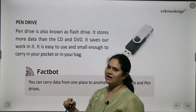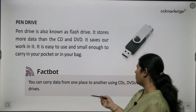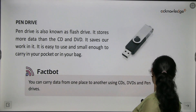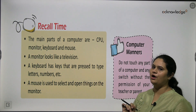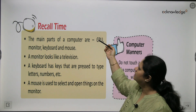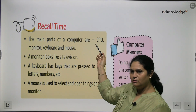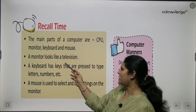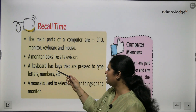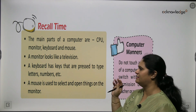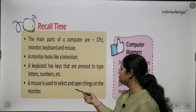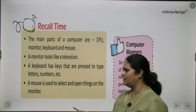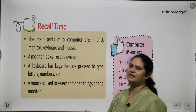You can carry data from one place to another using a CD, DVD, or pen drive. Now let's recall this chapter. The main parts of a computer are CPU, monitor, keyboard, and mouse. A monitor looks like a television. A keyboard has keys that are pressed to type letters, numbers, etc. And the mouse is used to select and open things that you see on your computer screen.